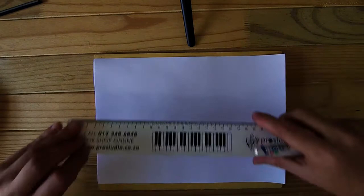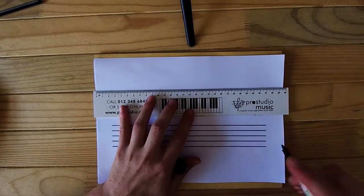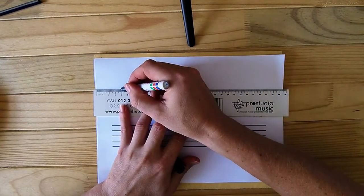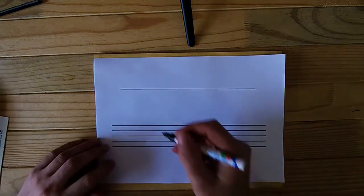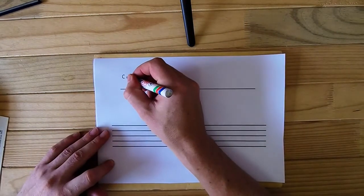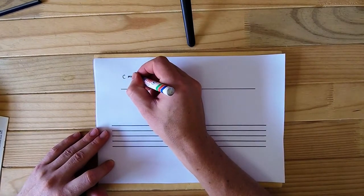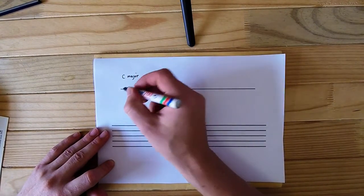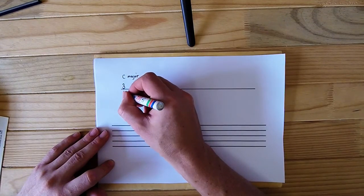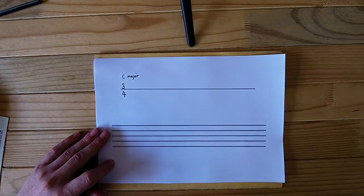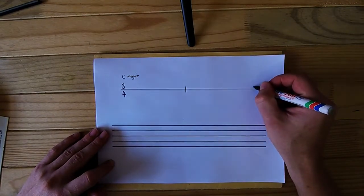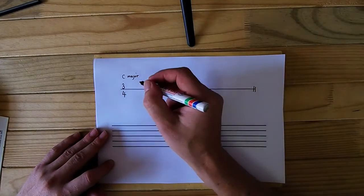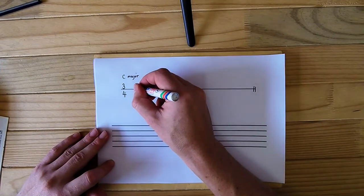The first question in the book is: write a tune using notes of the tonic triad in any register to the given rhythm. Use a key signature and finish on the tonic. Then what they do is give you the key. They'll give you a line where the rhythm is written on, and then they give you the key, which is C major. And then they give you the key signature as well, 3-4 in this case. Then they give you a short two-bar rhythm to use as the rhythm for your melody.